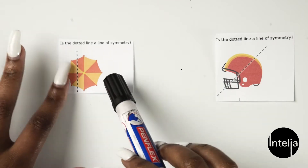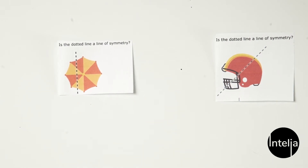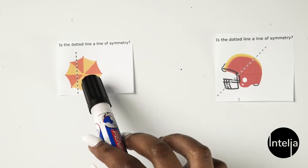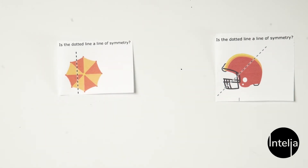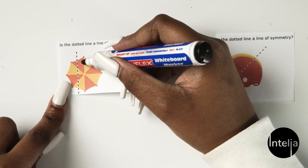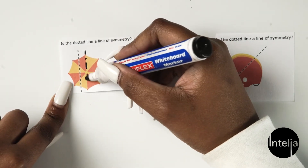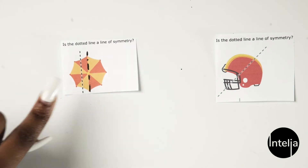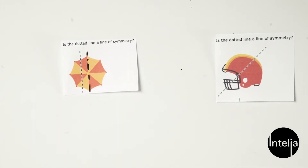Moving on to the next one — is this a line of symmetry? If you look at it, this half doesn't look like the other half. Maybe if the line was here, then we'd say that is a line of symmetry. But in that instance, this is not a line of symmetry.